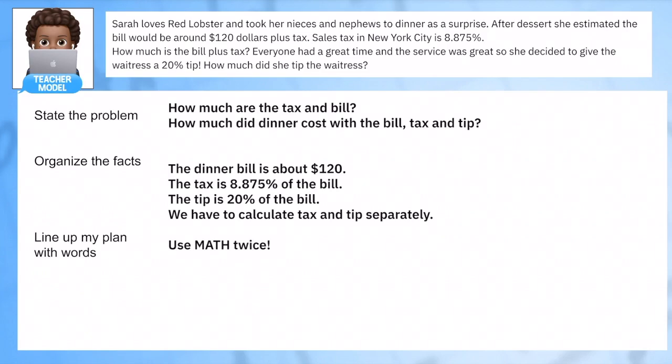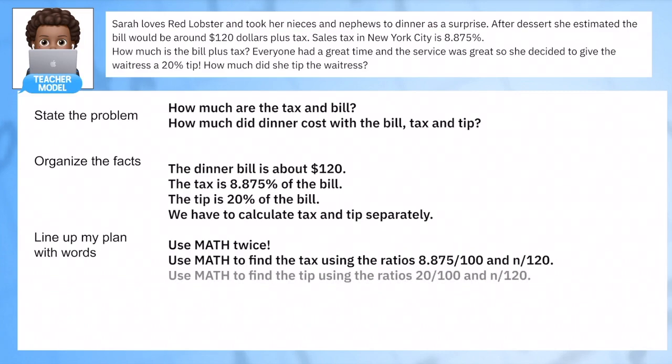We're going to calculate those separately. That means we're going to use math twice. We're going to use math to find the tax using these two ratios, and then we're going to use math again to find the tip using these two ratios. We're going to cross multiply to figure out what those two amounts are. Finally, we're going to add the tax, the tip, and the bill to figure out the total cost of the meal. Hit pause so you can jot this down into your notes before we try it out.